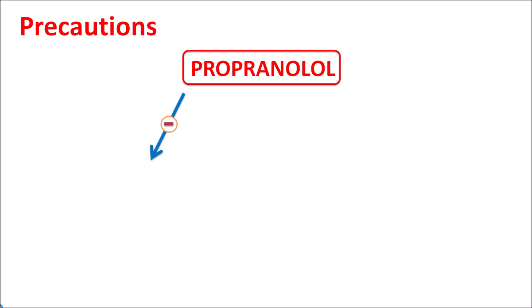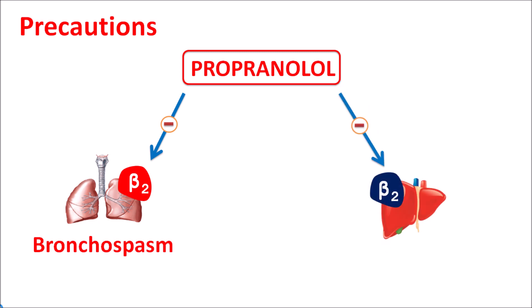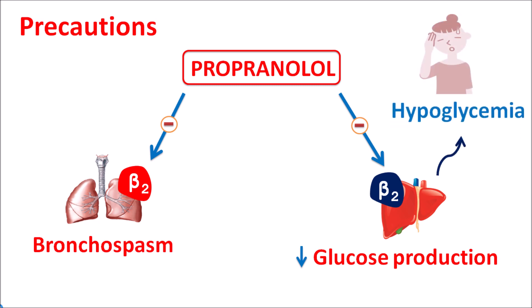What are the precautions? One important precaution is that because of its non-selectivity, this drug can block beta-2 receptors located on the lungs, producing bronchospasm. That's why propranolol should be used carefully and is contraindicated in asthmatic patients. Similarly, it can block beta-2 receptors on the liver, resulting in decreased hepatic glucose production, which may worsen hypoglycemia. This is particularly important in diabetic patients treated with anti-diabetic agents that already produce hypoglycemia, as propranolol can further increase hypoglycemia. So in diabetic patients propranolol should be used carefully.